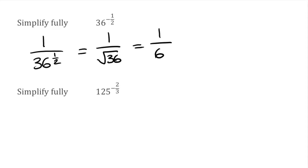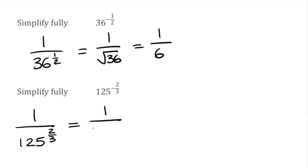This next question is slightly different, as we have a number greater than 1 on the numerator. We've got 125 to the power of negative 2 thirds. The first thing we notice is that negative index, so what we can do is write this as 1 over 125 to the power of positive 2 over 3. With our fractional index, we have a 3 on the bottom, so we'll be doing the cube root of 125, and then once we get an answer to that, we square it, because we have a 2 on the numerator.